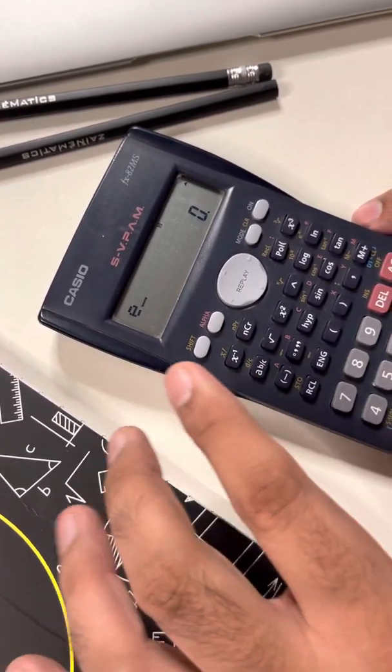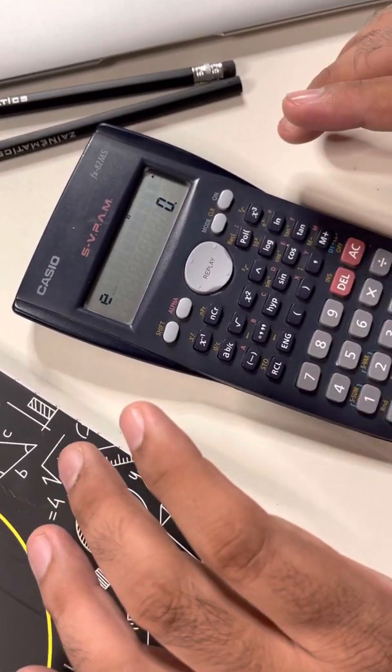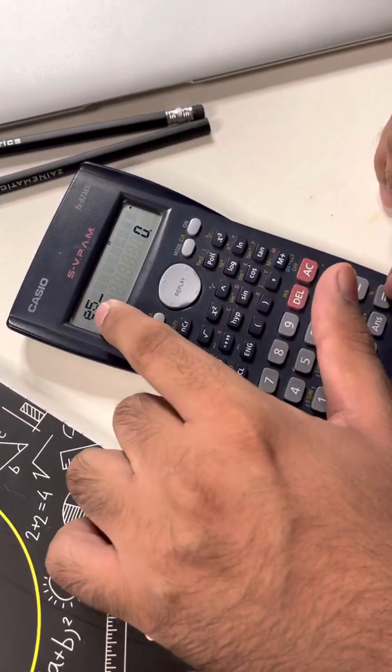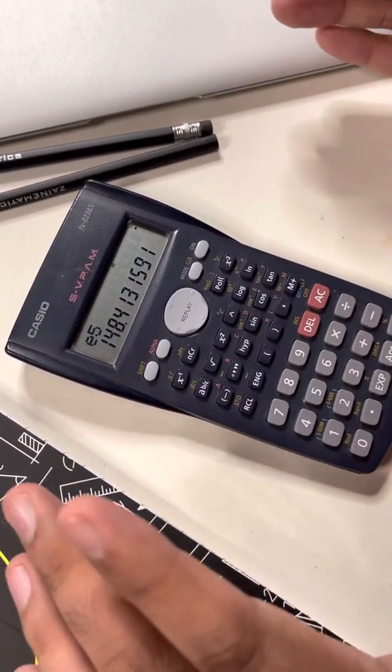With this one, if you want to do e raise to the power five, the raise to power button is already there. All you have to do is press five after this, so e to the power five would be the same way. So there are two ways you can do the same thing.